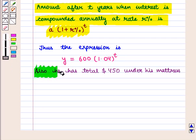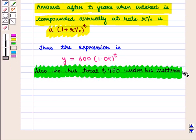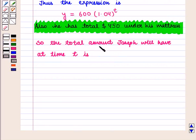Also, he has total $450 under his mattress. So, the total amount Joseph will have at time t is given by Y equals 450 plus 600 into 1.04 raised to power t.